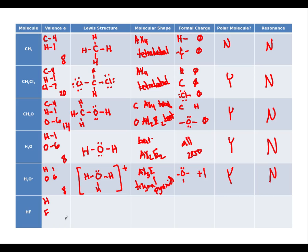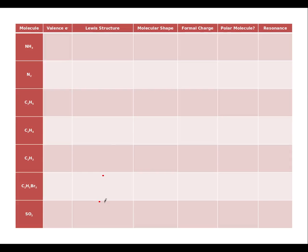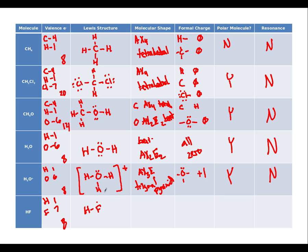Alright. Last one on this page. H and F are just gonna have a single line with all the extra electrons on the fluorine. It's really two items, so it doesn't really have a shape. It's linear, but that's not linear geometry because neither one of those is a central atom. Hydrogen still has a zero formal charge. Fluorine, when it has six dots and one bond, will have a formal charge of zero. This is polar because there is a definite electronegativity difference between a fluorine and a hydrogen, but it does not have any resonance.